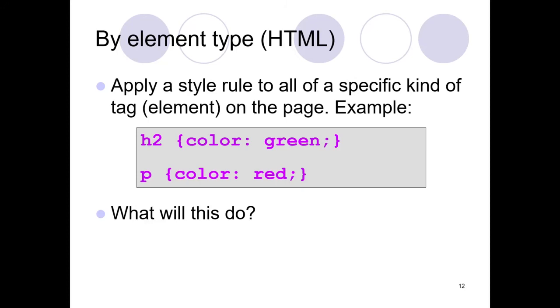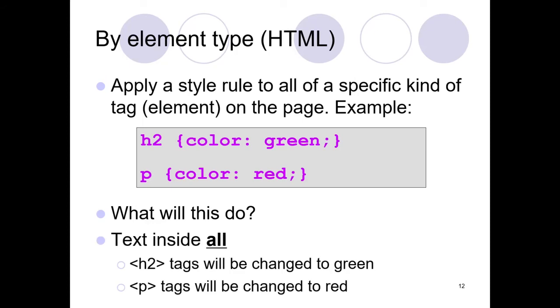For example, what would this do here? Well, of course, I'm sure you're all shouting it would make the H2 green and the paragraphs red. Yeah, and all H2s would be green and all paragraphs would be red. As default, what was on the page in the styling we've actually set there, by targeting all the tags of one particular type.